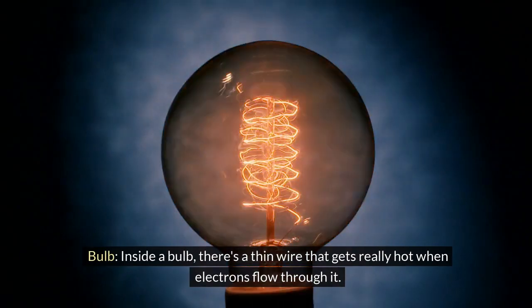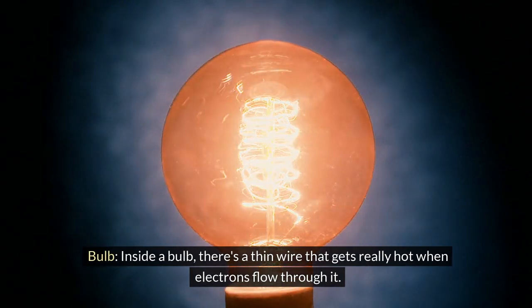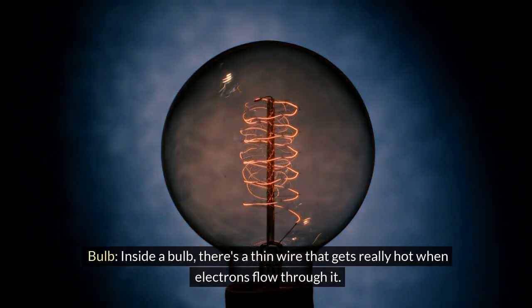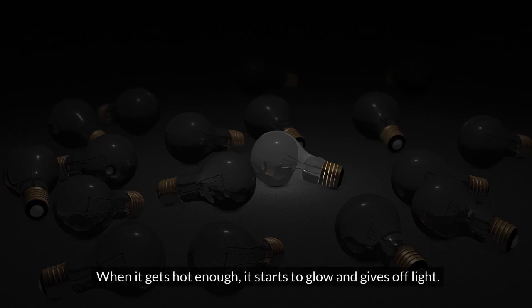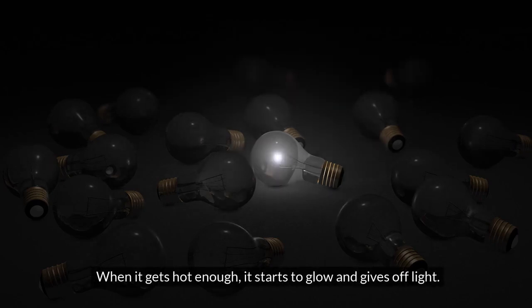Bulb, inside a bulb, there's a thin wire that gets really hot when electrons flow through it. When it gets hot enough, it starts to glow and gives off light.